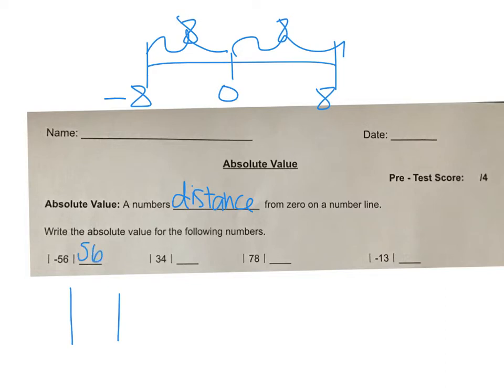The absolute value of 34, how far away is 34 from zero? It is 34. Try the next two on your own and then come back and check it.